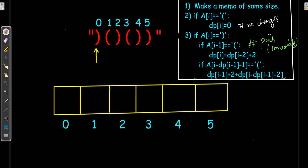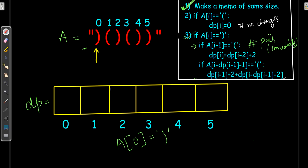Let's walk through one more example. I have a new expression 'a' and I've initialized the DP array to zeros. At a[0] we have a close brace. We check the third-point conditions: there's no value before index 0, so we can't find an immediate open brace. There's also no pair before it, so it returns 0 — no valid pair found here.